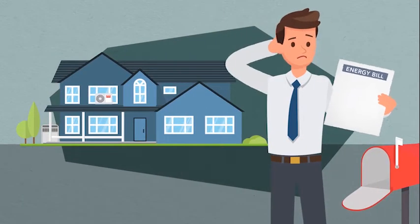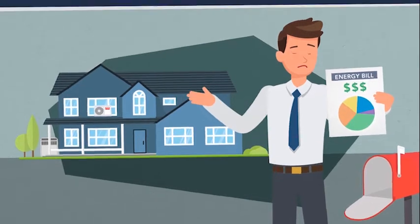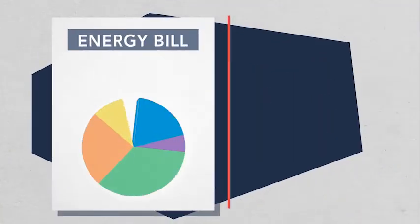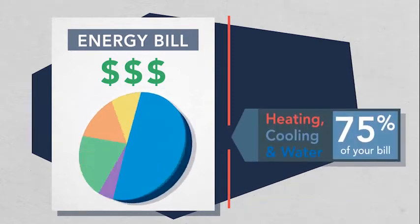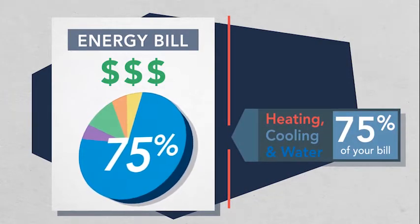First, let's break down your utility bill to see where your money is going. Heating and air conditioning are the largest energy expenses in your home. Add in water heating and this equipment makes up 75% of your energy bill.